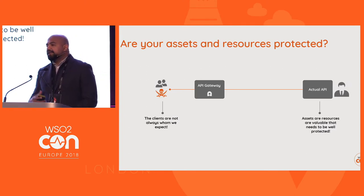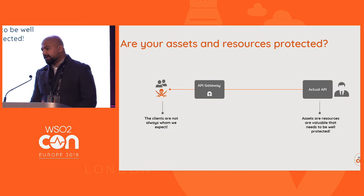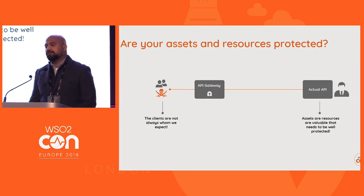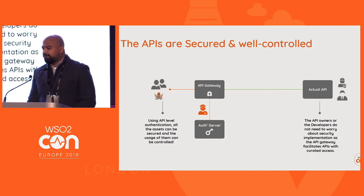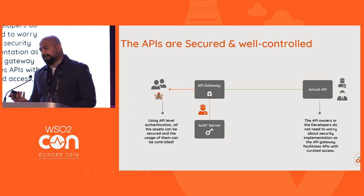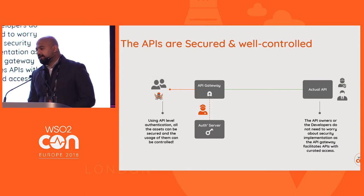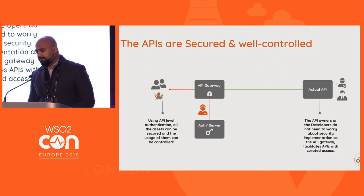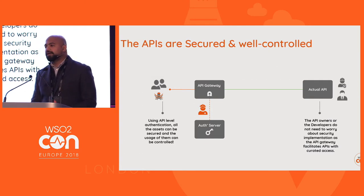When you expose organizational capabilities into a common network, you need to think about security because you don't know how people are accessing your internal resources. You need the help of another component such as an OAuth server or authentication server. The API gateway must be secured with an authentication mechanism so you can control who accesses your capabilities and assets.